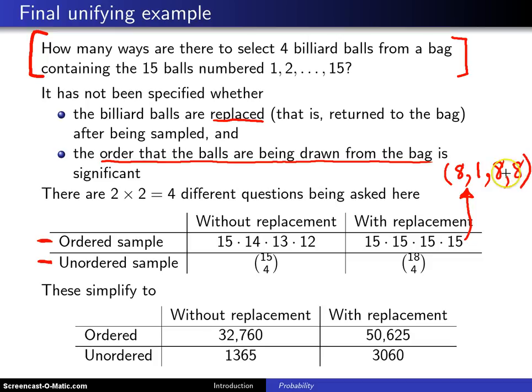That might be the easiest of the bunch. In that particular ordered sample, by the multiplication rule, we had 15 choices on that first draw. Since we return that ball to the bag, we have 15 on the second draw, and the third, and the fourth. So we have 15 to the fourth power, and that turns out to be 50,625.